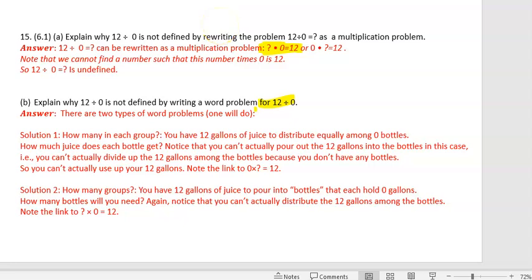We know as a fact that a number divided by zero is undefined. But we need to be able to explain to our students why a number divided by zero is undefined. And so we have two different explanations.